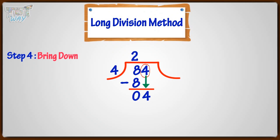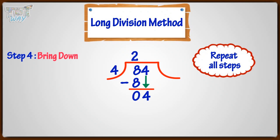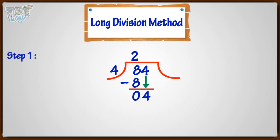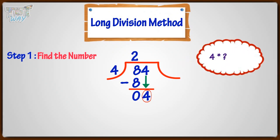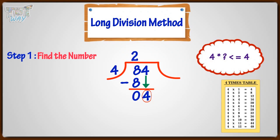Now we have followed the four steps of long division method. Repeat all the steps till no digit is left in the dividend to bring down. First step: find the number — find how many times the divisor can go into the number 4. Think this way: 4 multiplied by what gives us a number which is less than or equal to 4? 4 multiplied by 1 gives us 4. So, 1 is the number we want. Write it in the quotient.